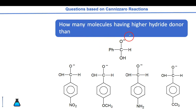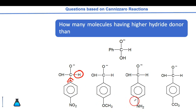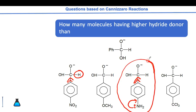To determine H minus donor priority in Cannizzaro: the higher the electron density at the carbonyl carbon, the easier it is to remove H minus. You must check whether the substituents are electron donors. Nitrogen is the most electron-donating group, so the carbon bearing nitrogen has the highest negative charge density and will most easily donate H minus. These are the key questions based on the Cannizzaro reaction. Moving on to the next video for the next name reaction — thank you.